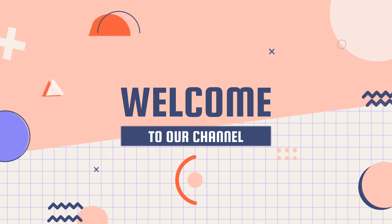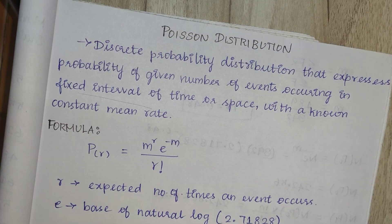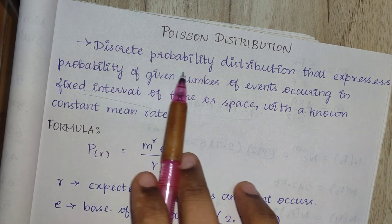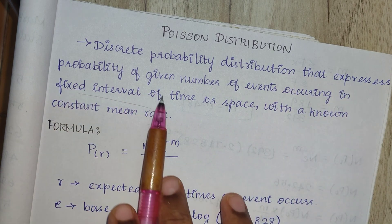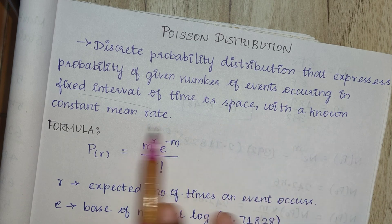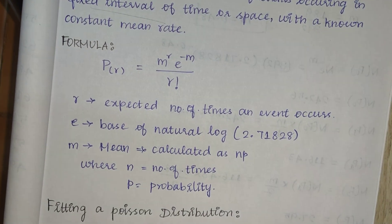Welcome back to our channel Subject 360. In this video we will talk about the concept of Poisson distribution. Poisson distribution is a discrete probability distribution for a fixed interval of time. It expresses the probability of a given number of events occurring in a fixed interval of time or space with a non-constant mean rate.